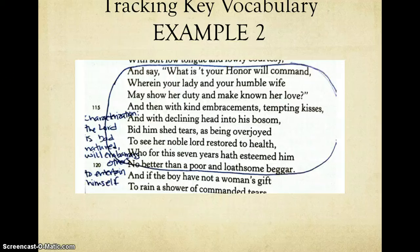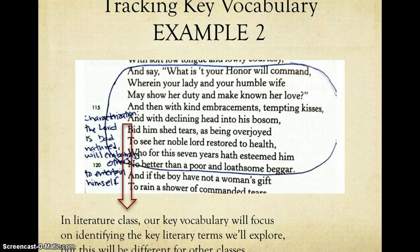The second way is when the vocab word is from the class and doesn't directly pop up in the text. So here again, the Lord is speaking, and what he's saying is leading me to form an opinion of him. In literature class, you're going to be talking about literary terms. One of the literary terms we'll be addressing is characterization. So, while characterization does not actually appear in this section that I've circled, what the Lord is saying leads me to characterize him. And so the purpose of the word came up, which leads to my annotation. So in literature class, our key vocabulary will focus on identifying the key literary terms we'll explore, but keep in mind that this is going to be different for other classes.